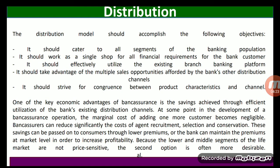The next key driver is distribution strategy. The distribution model should accomplish the following objectives: it should cater to all segments of the banking population, work as a single shop for all financial requirements for the bank customer, effectively utilize the existing branch banking platform, take advantage of multiple sales opportunities afforded by the distribution channel, and strive for congruence between product characteristics and channel.